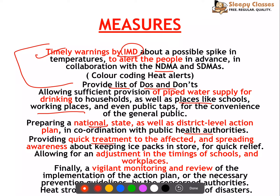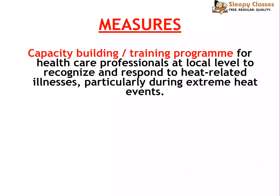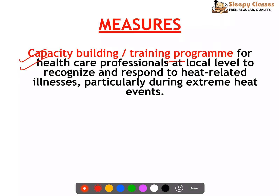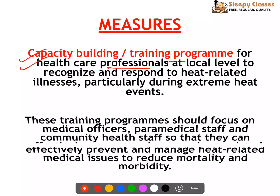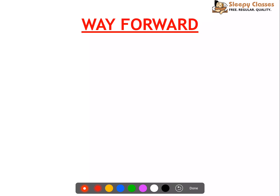National, state, and district level action plans need to be developed in coordination with public health authorities. Measures also include providing quick treatment to the affected, spreading awareness about keeping ice packs, adjusting timings of schools and workplaces to avoid peak heat hours, and closing schools entirely during severe heat wave conditions. Vigilant monitoring and review of implementation of the action plan is also very important. Capacity building and training programs for healthcare professionals - medical officers, paramedical staff, and community health staff - should be organized so they can collectively prevent and manage heat-related illnesses to reduce mortality and morbidity.